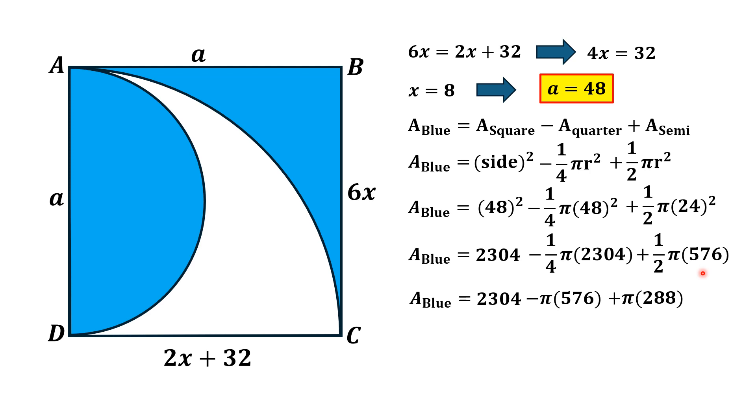And from here we have blue area is equal to 2304 minus 288 pi. And if we use a calculator and simplify these numbers, we will have area of blue shaded region is equal to 1399.22 square units approximately. And that is the answer.